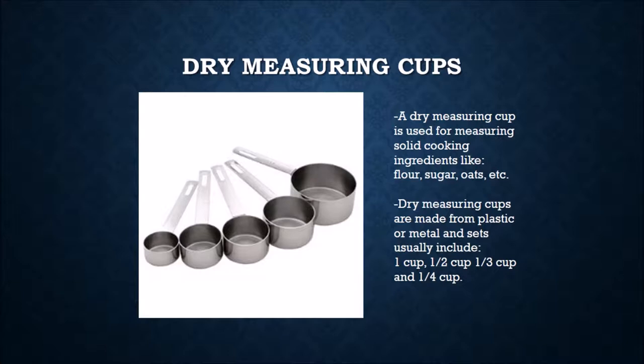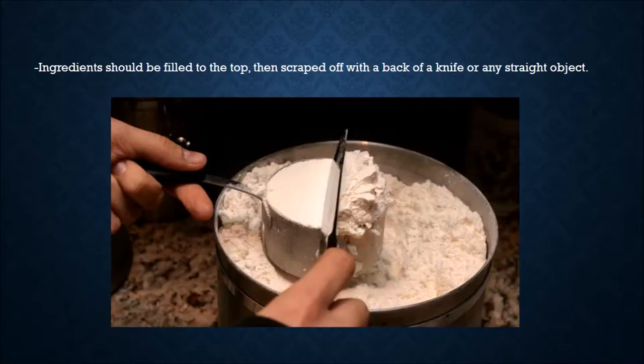Dry measuring cups: a dry measuring cup is used for measuring solid cooking ingredients like flour, sugar, and oats. Dry measuring cups are made from plastic or metal, and sets usually include a one cup, half cup, third cup, and fourth cup. Ingredients should be filled to the top, heaping over, and then scraped off with the back of a knife or any straight object.